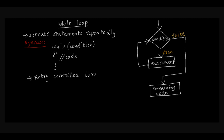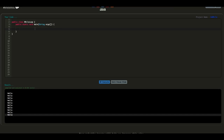If we use the for loop, the number of iterations is known. But for while loop, if the condition is true, we execute the set of statements; if the condition is false, we exit the loop. Now let's look at the example program.